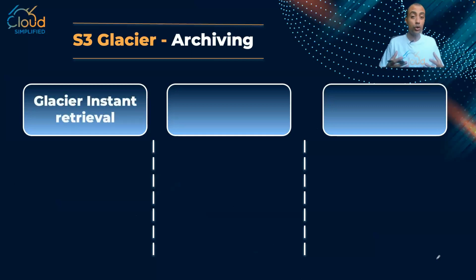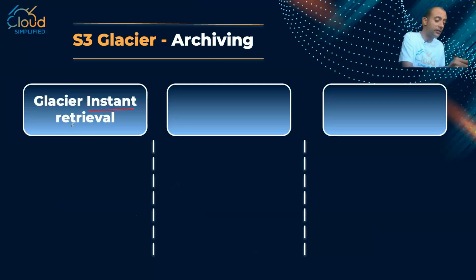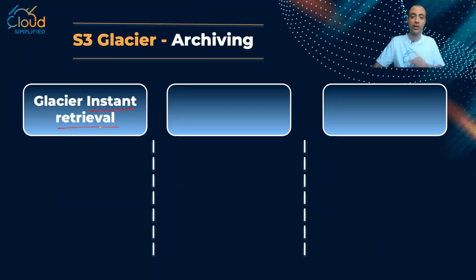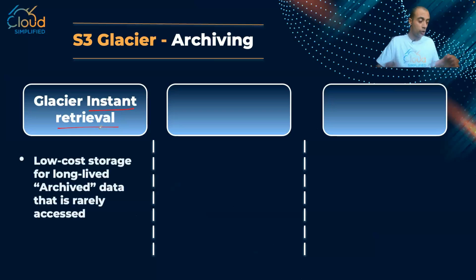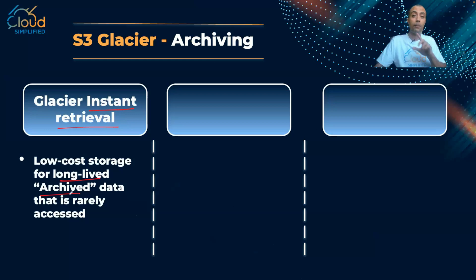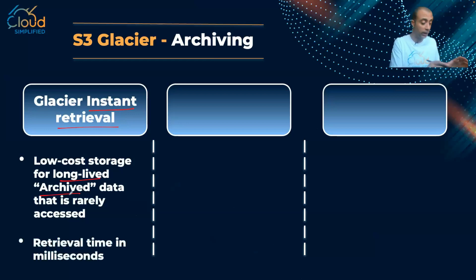S3 Glacier has three storage classes. The first — and this is a newer storage class — is Glacier Instant Retrieval. This is for data I'd like to archive but need to access immediately at any given point in time. It's the lowest-cost storage for long-lived archived data. It's very rarely accessed, but if I need to access it, retrieval time is in milliseconds.